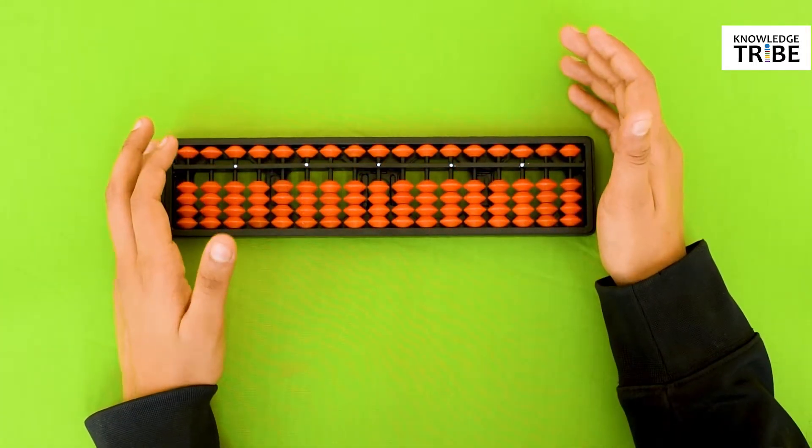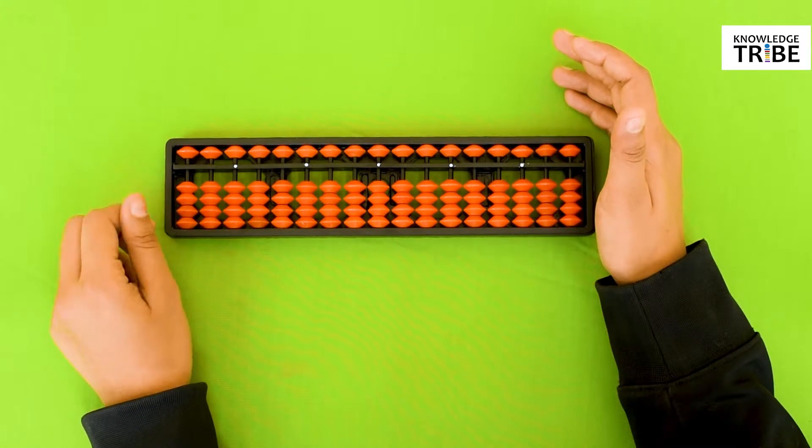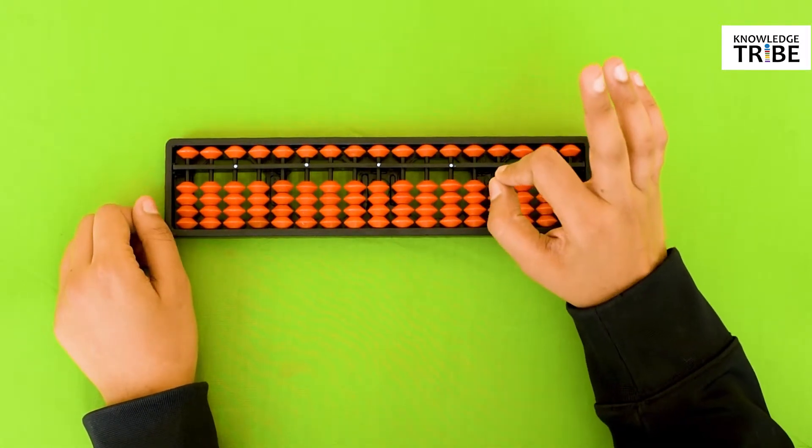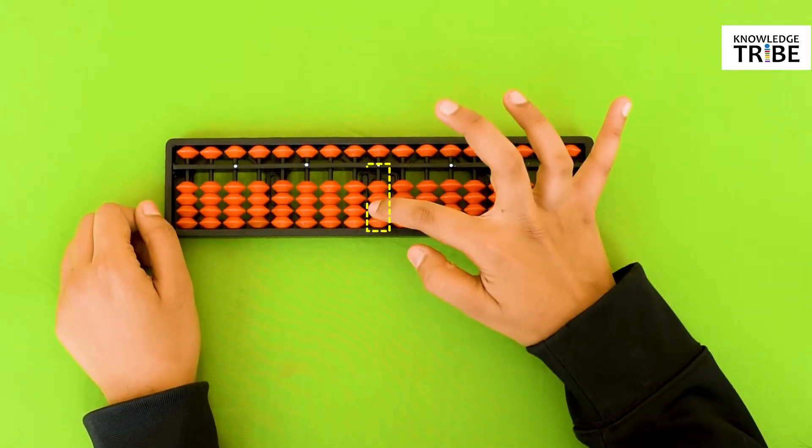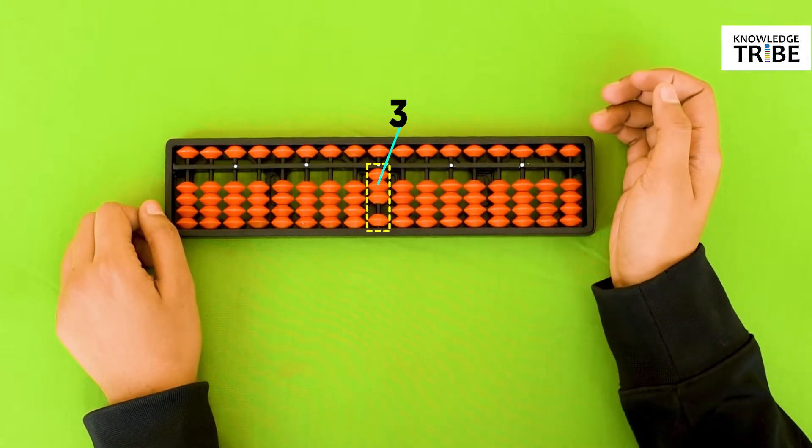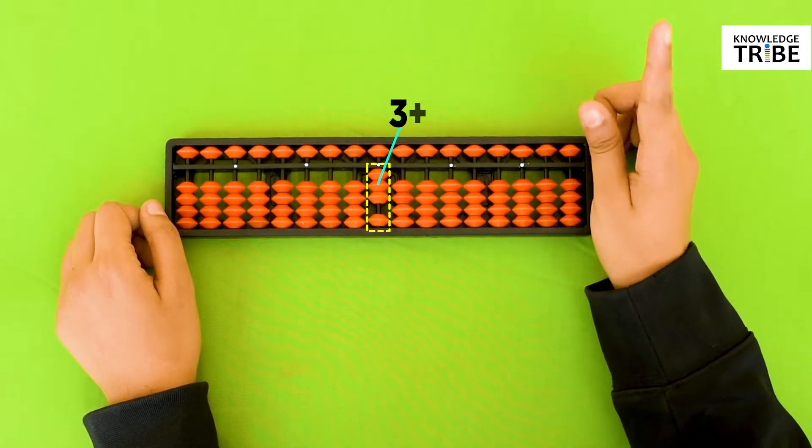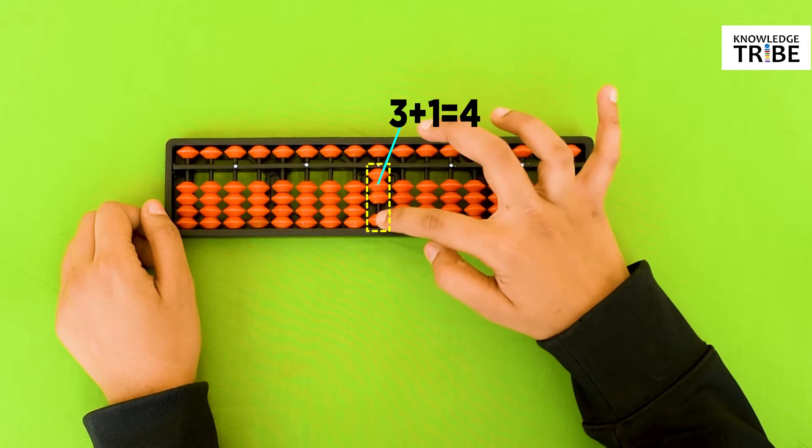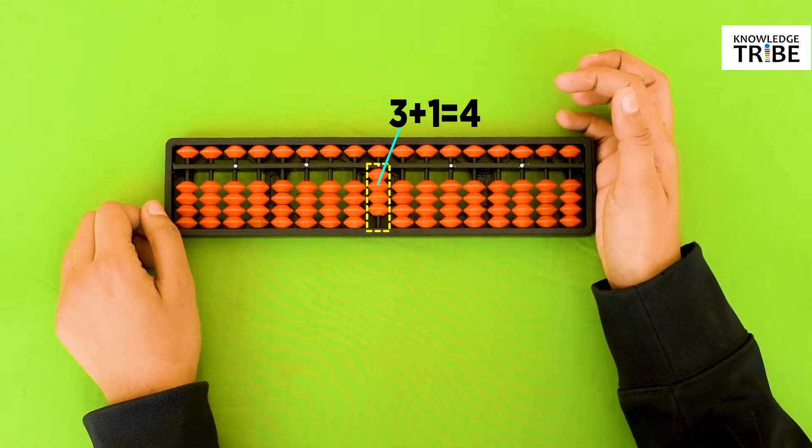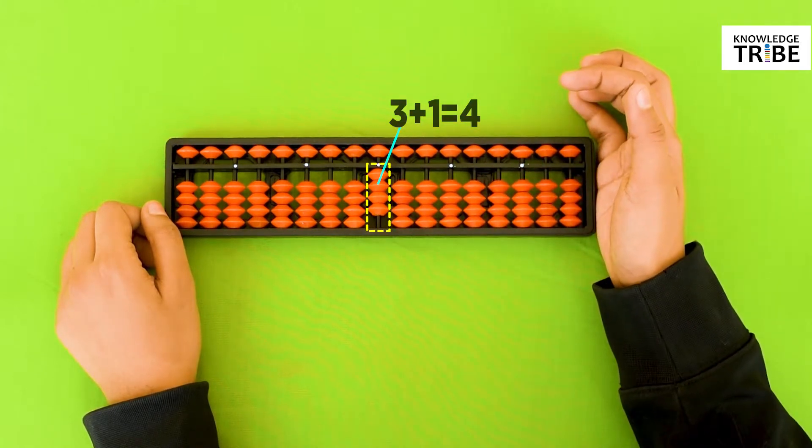Now we will look at 3 plus 1. We are moving 3 earthly beads towards the center beam, and we will add one more earthly bead to that.